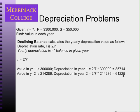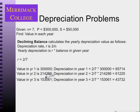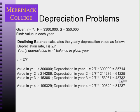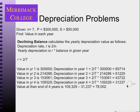Subtracting the year 2 depreciation from the year 2 value gives us the value in year 3, approximately $153,000. We continue multiplying each year's beginning value by 2/7 to get that year's depreciation, subtracting to get the next year's value, and so on all the way down until we reach $50,000 and stop.